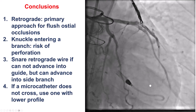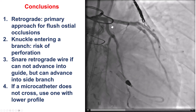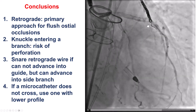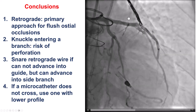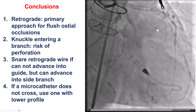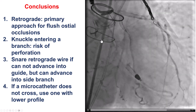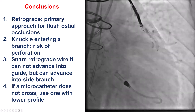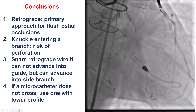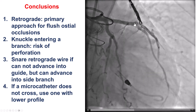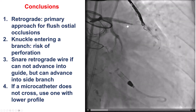There are several lessons from this case. First, when you have a flush ostial occlusion with a blunt proximal cap, the retrograde approach is attractive if it is technically feasible. In this case, we had a patent graft to the LAD that served as a nice retrograde conduit. Second, we say 'trust the knuckle,' but always verify, because the knuckle is not perfectly safe. What likely happened here is that the knuckle went into a small branch, likely a small septal.